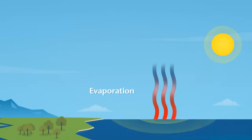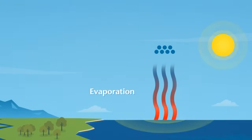So in the sky, the water vapor cools and changes back into tiny water droplets. This change is called condensation and is the opposite of evaporation.